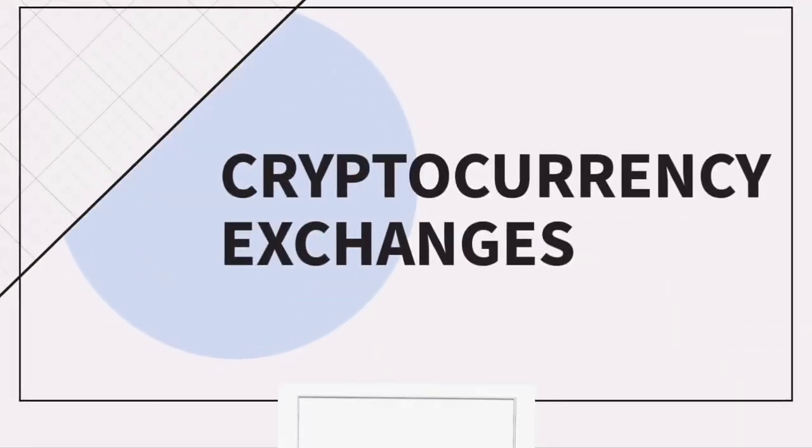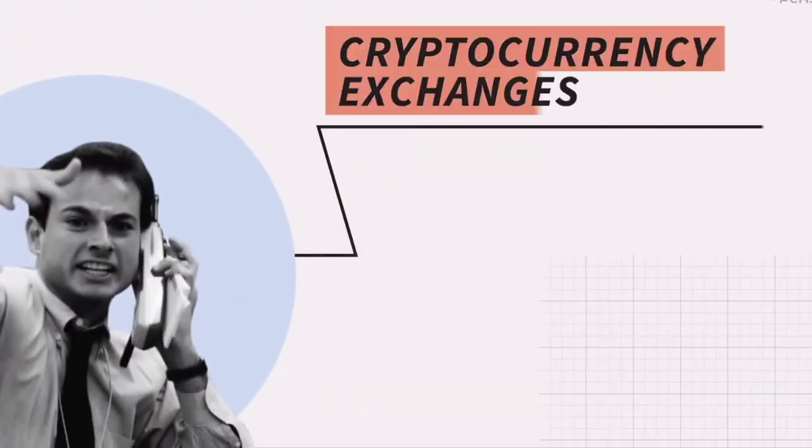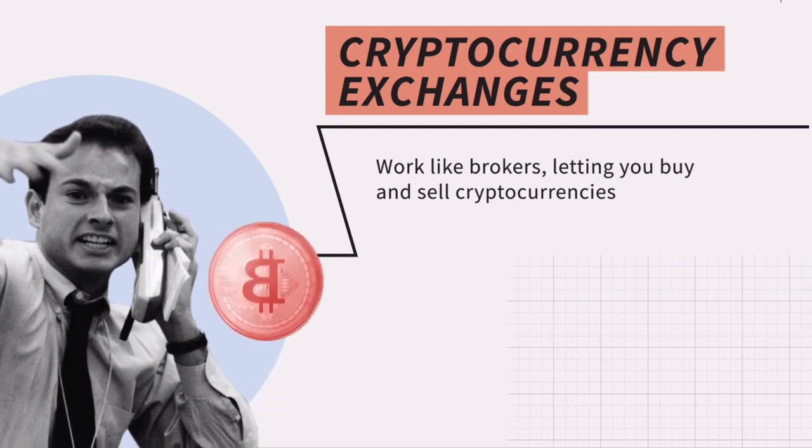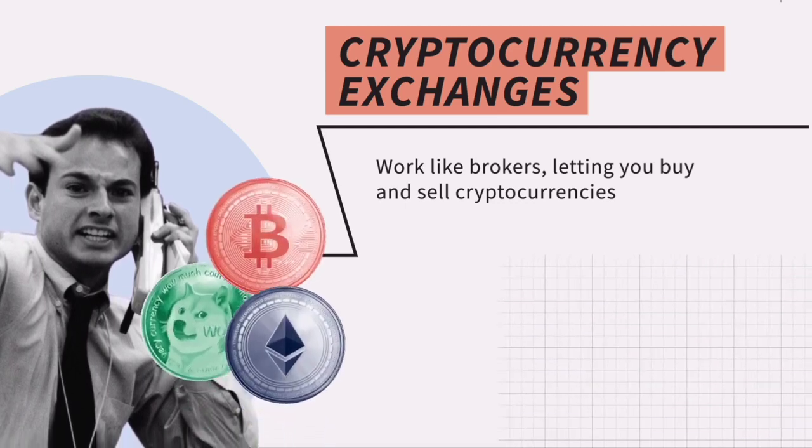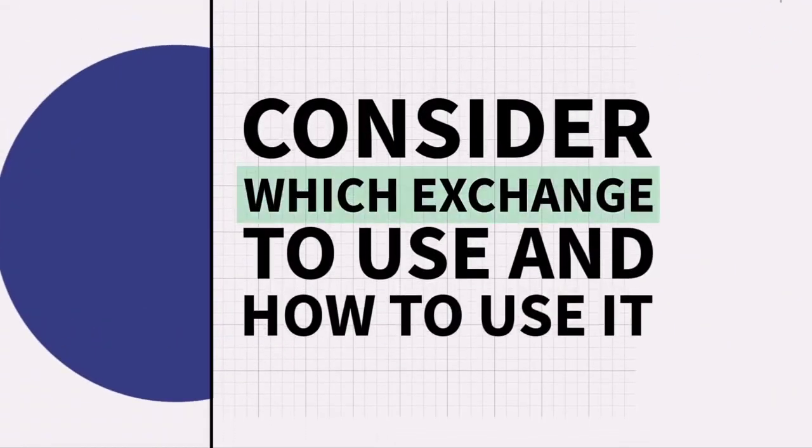Cryptocurrency exchanges: what they are and how to choose. Cryptocurrency exchanges work like brokers, letting you buy and sell cryptocurrencies like Bitcoin, Ethereum, and Dogecoin. When using cryptocurrencies, you need to consider which exchange you want to use and how you want to use it.